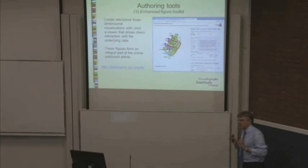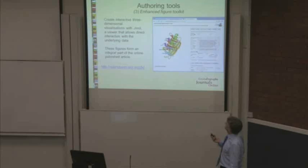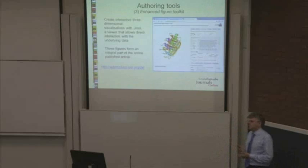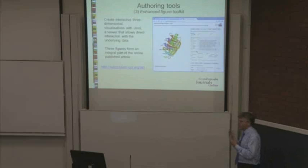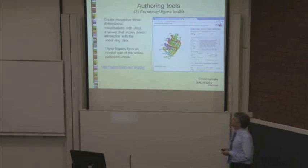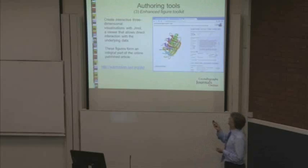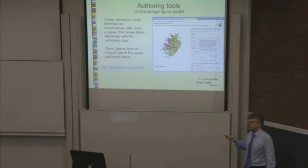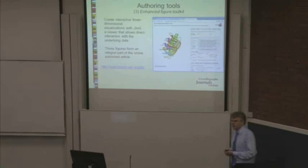We also make available the Enhanced Figure Toolkit, which again behind it has JMol. This is obviously a protein structure rather than a small molecule, but it'll work happily for either. This allows you to prepare a static image of however you want to represent your structure, but also dynamic images as well. The journals will publish dynamic images quite happily. And once you've prepared your image in this way, you can upload it directly to our submission system — everything's carried through, you don't need to worry about it, and it'll be published in that form.